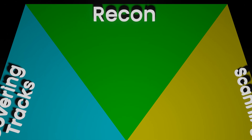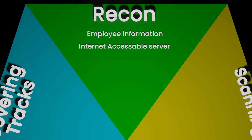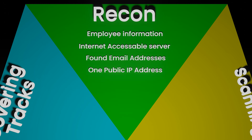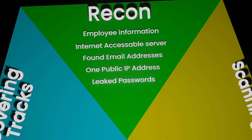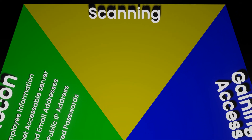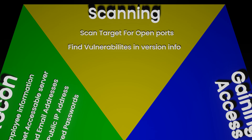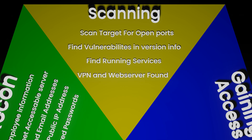Since we are following the five phases, we first do reconnaissance. During reconnaissance, we find some employee information and one server connected to the internet, obtaining several email addresses and one IP address. By searching password breach lists, we found that several company email addresses appear in the list. We then move to the scanning phase, where we scan the IP address for open ports, vulnerabilities, and running services. We found that the server is running a VPN server and a web server.